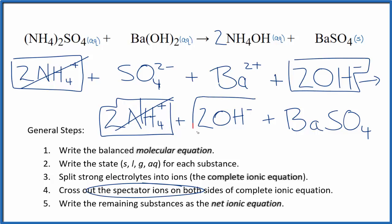What's left is the net ionic equation for ammonium sulfate plus barium hydroxide. I'll clean it up and write the states to give us our net ionic equation.